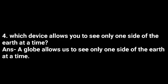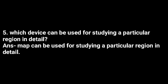Fourth question: which device allows you to see only one side of the earth at a time? Answer: a globe allows us to see only one side of the earth at a time. Fifth question: which device can be used for studying a particular region in detail? Answer: a map can be used for studying a particular region in detail.